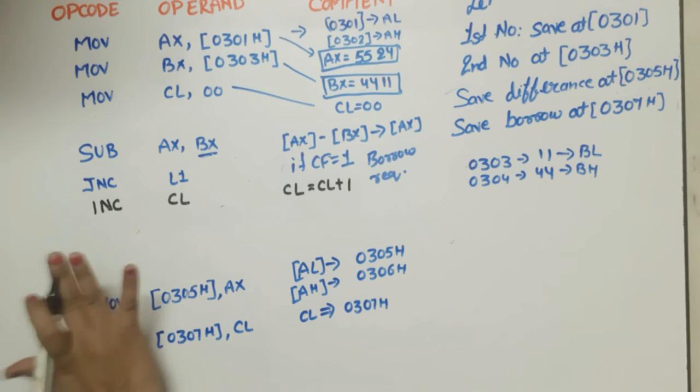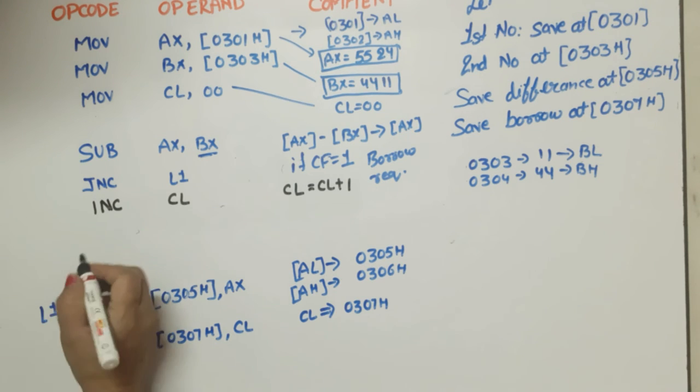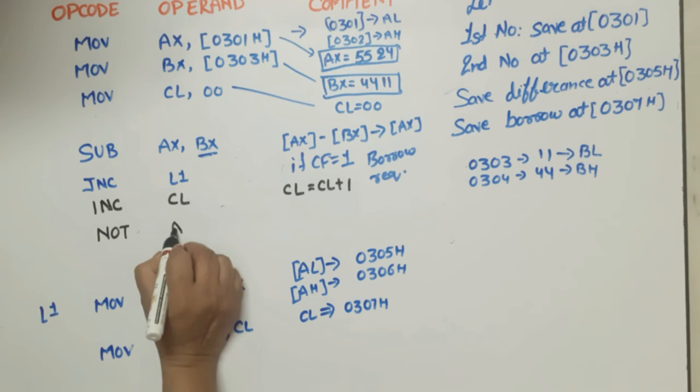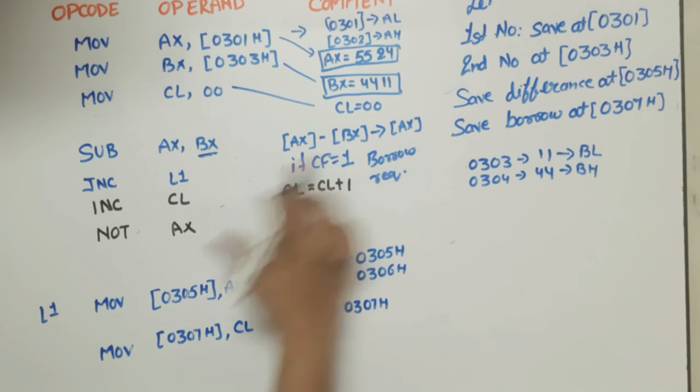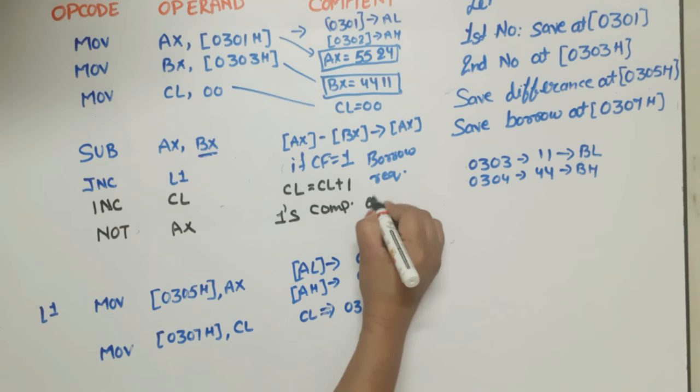Now after that, when we have borrow requirement, the result comes in two's complement form. So now if we need one's complement, we will do NOT AX, means that the difference, we took its one's complement. So this is the one's complement of AX, done.